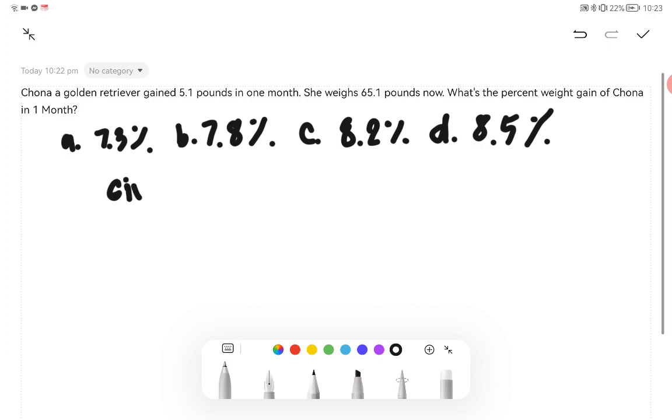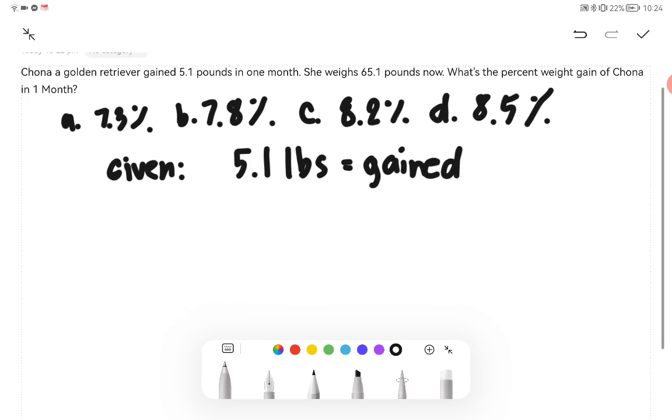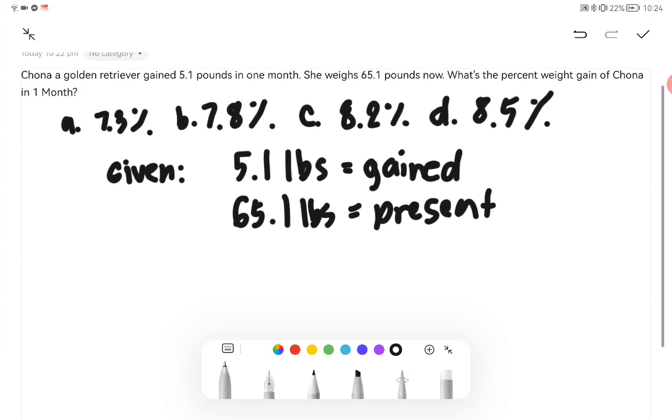First, our given is the weight gain of Jonah is 5.1 pounds—this is what she gained. And then also we have 65.1 pounds as her present weight. Okay, therefore her weight beforehand is 65.1 minus 5.1.